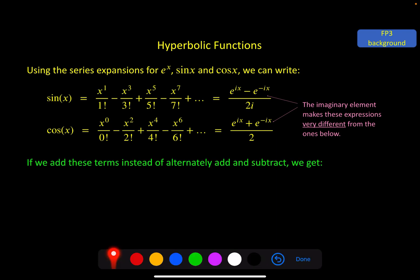Because if we take these and instead of alternately subtracting and adding we just add all of the terms, we get a very similar expression but without the imaginary coming in. And this thing here, adding all of these terms without i, is called hyperbolic sine.